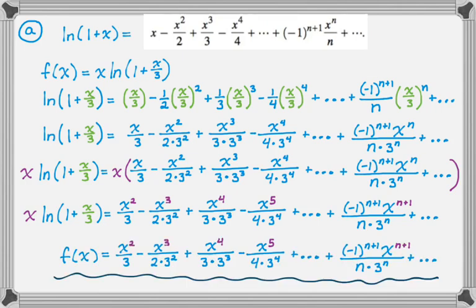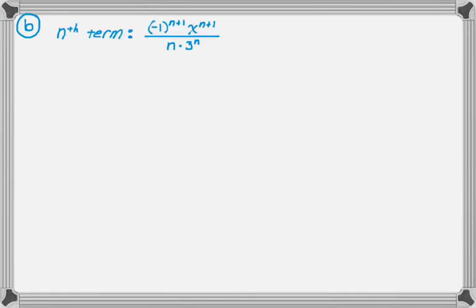So that's part (a) — direct substitution followed by multiplication by x. That's a very common thing to be asked to do, so make sure you know how to do that. The next part asks us to determine the interval of convergence, so I need the nth term of the series we found.